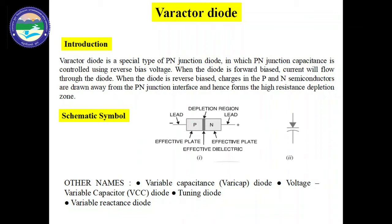The circuit symbol of the varactor diode is almost similar to a normal PN junction diode. Two parallel lines at the cathode side represent two conductive plates, and the space between these two parallel lines represents the dielectric.